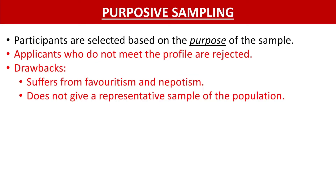That brings us to the first type: purposive sampling. As the name suggests, participants are selected based on the purpose of the sample, and applicants who do not meet the profile are rejected. For example, if I want to find out which is the most famous bike in the country, I select people who already own a bike and take their views. However, this sample won't give the required result because I have not selected the sample properly — people who don't have bikes can also suggest the best bike. The drawbacks of purposive sampling are that it suffers from favoritism and nepotism, and it does not give a representative sample of the population.